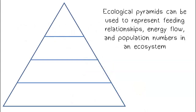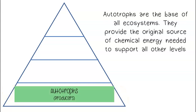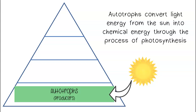Ecological pyramids can be used to represent feeding relationships, energy flow, and population numbers in an ecosystem. The base of a pyramid is the largest level and supports all other levels. Autotrophs are the base of all ecosystems. They provide the original source of chemical energy needed to support all other levels, converting light energy from the sun into chemical energy through the process of photosynthesis.